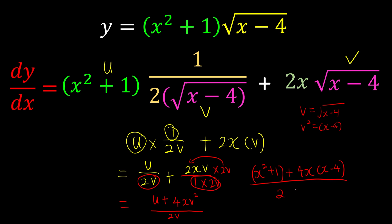So x - 4 divided by 2v. What is v? Again, v is √(x - 4).